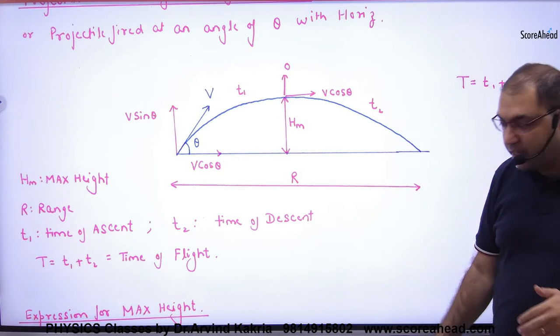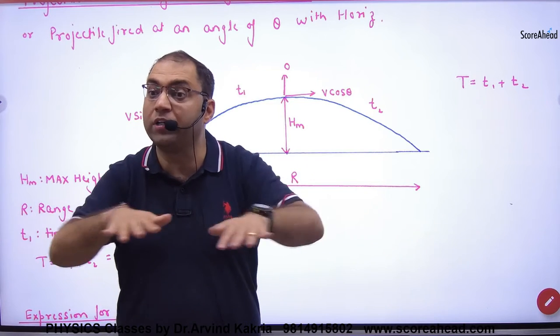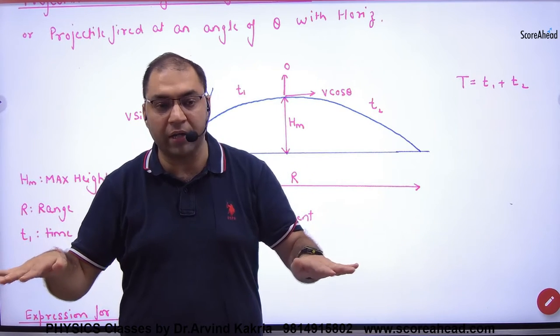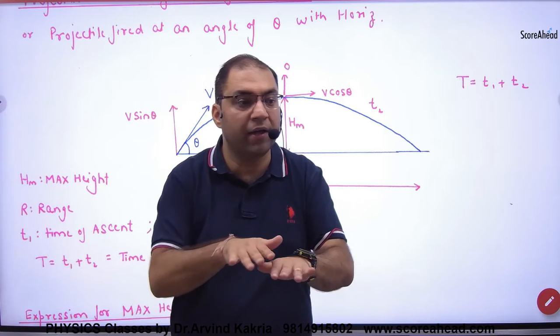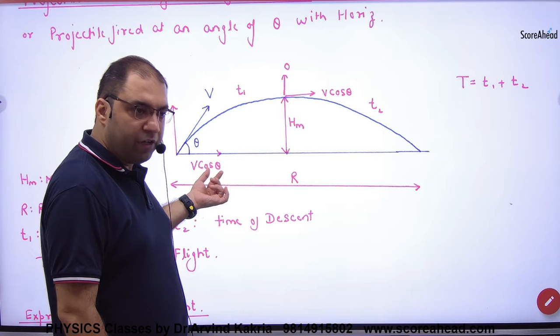So I will derive R. Now what is the fact of R? What is horizontal? If we derive R, which equation will be? In x-axis, velocity constant, how much? vcos theta.